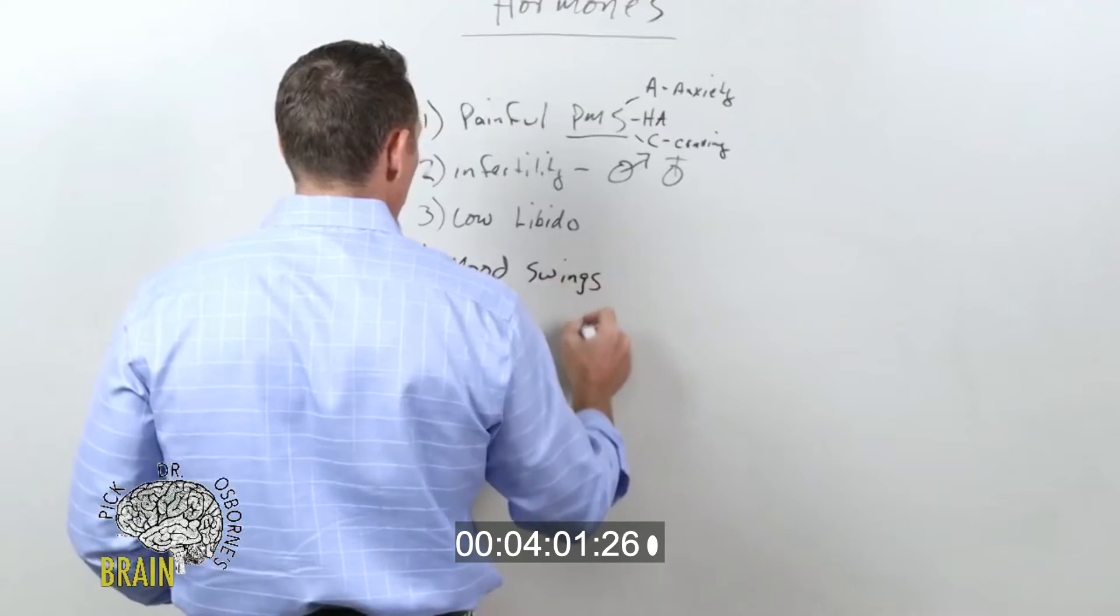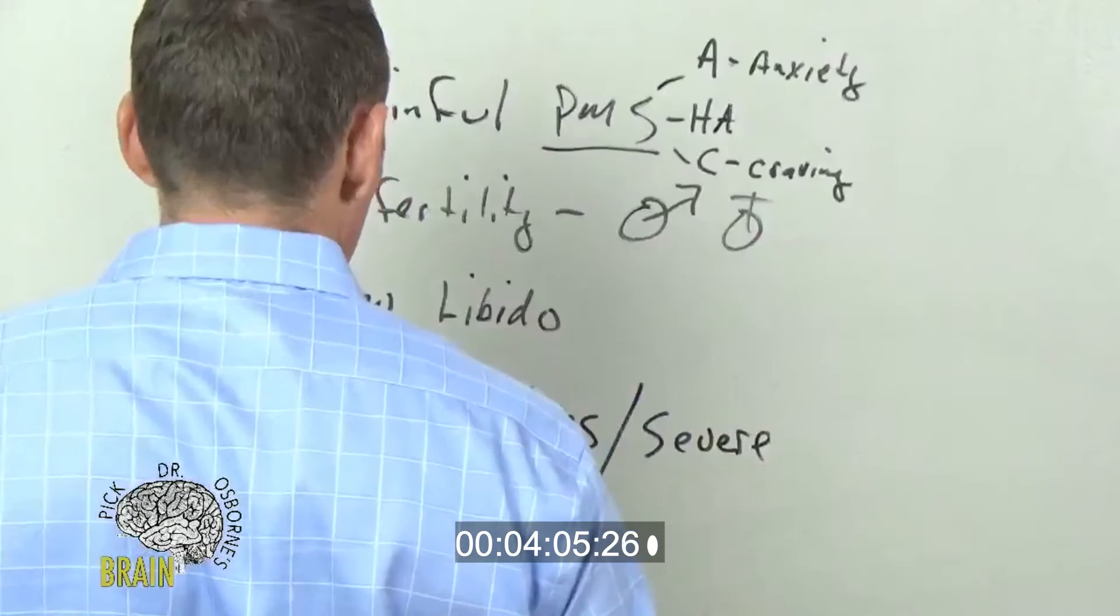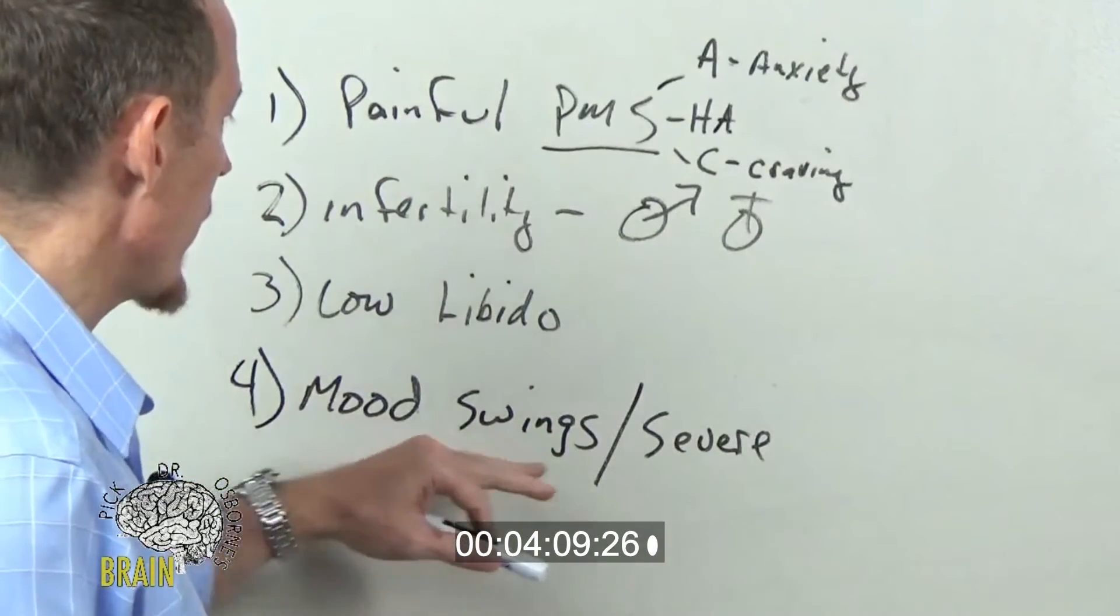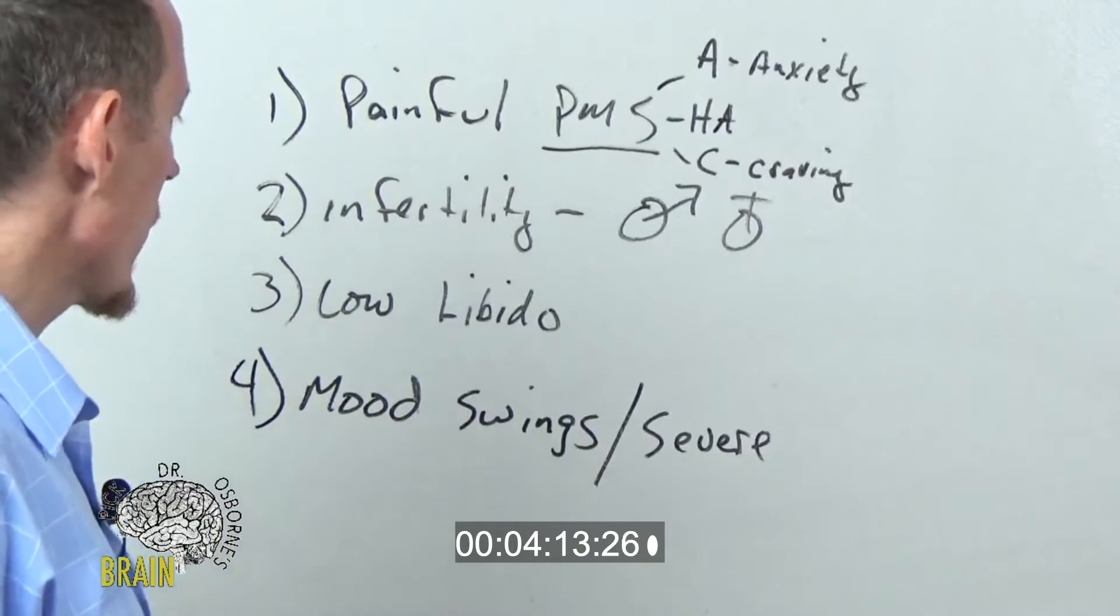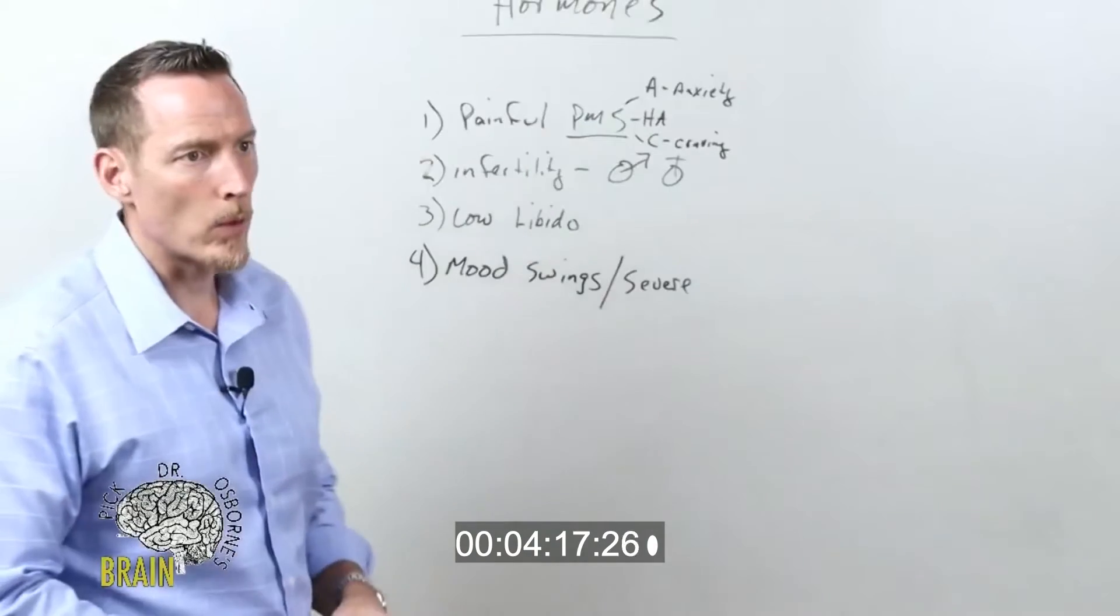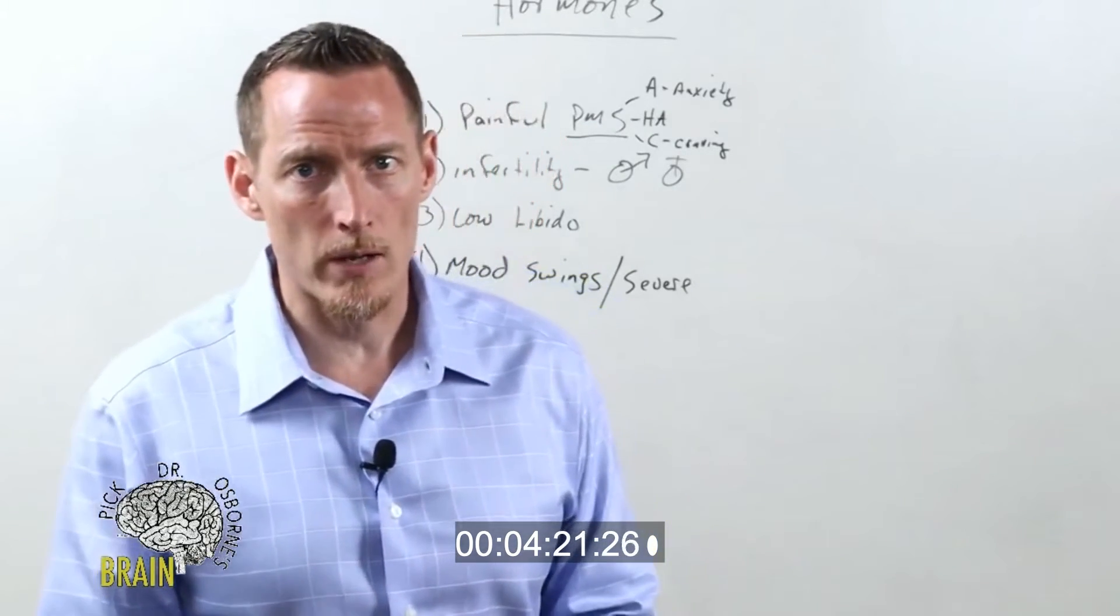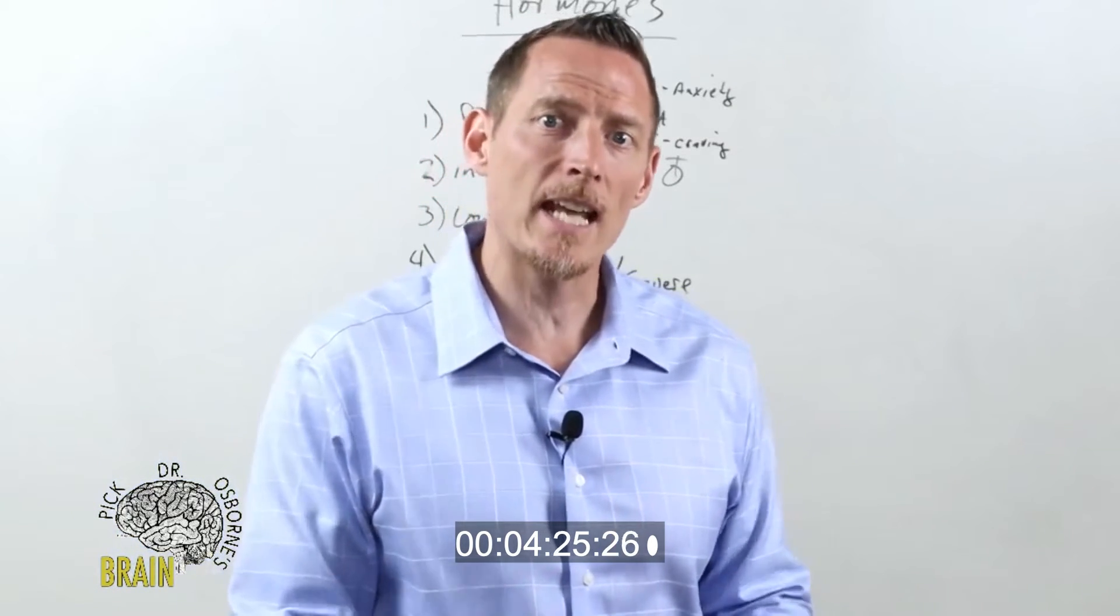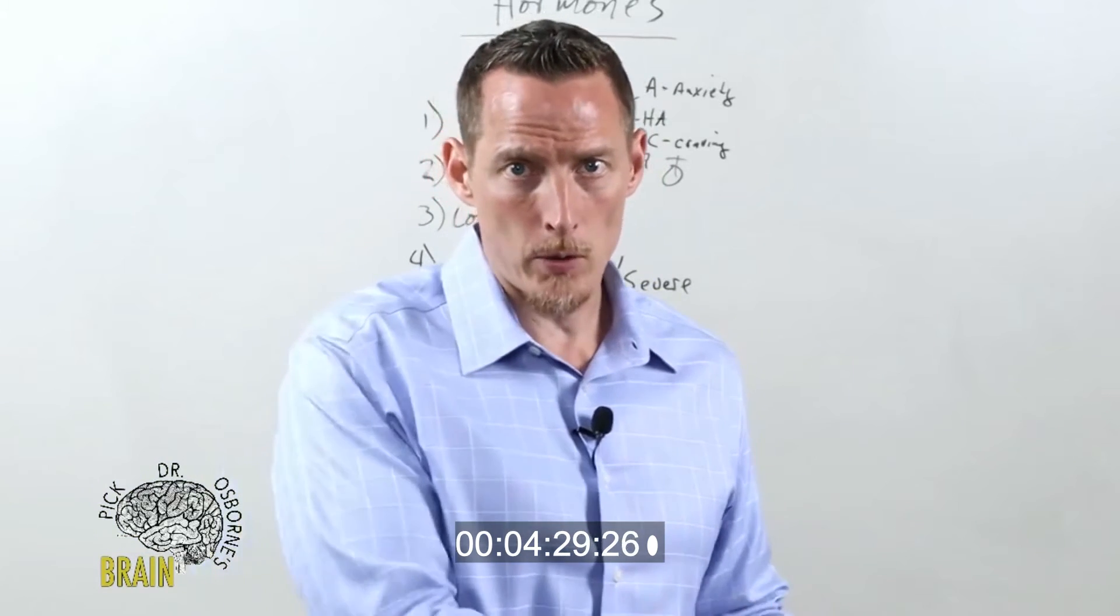We're talking about severe swings where men might get ragingly angry, women might get very unreasonable and angry, depression associated with these mood swings as well. All those can be part of a hormonal imbalance. We've also got sleep issues that can arise as a result of hormone imbalance: trouble sleeping or insomnia, trouble staying asleep, waking up in the middle of the night, falling asleep okay but waking up in the middle of the night could be a hormonal type of symptom or dysfunction.